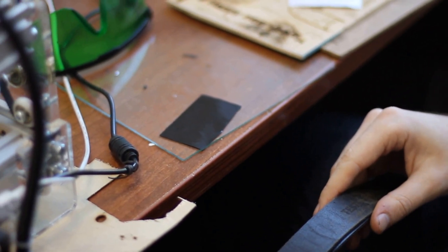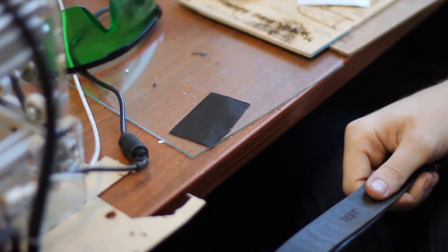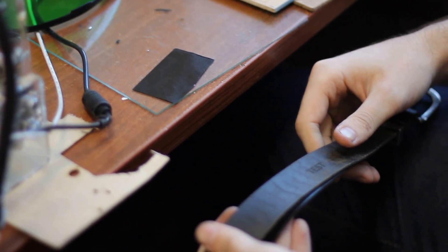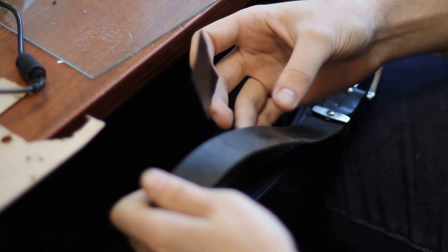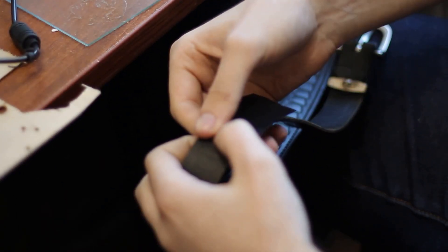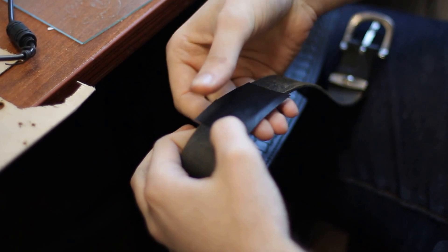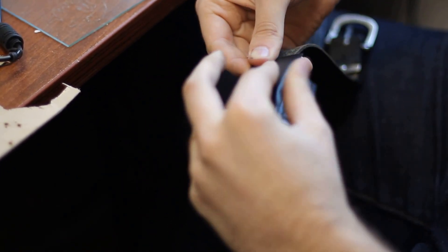We take a black piece of film and put it on my belt. You can see it's already glued on the opposite side, and now we glue it on top of the belt. It looks like this.